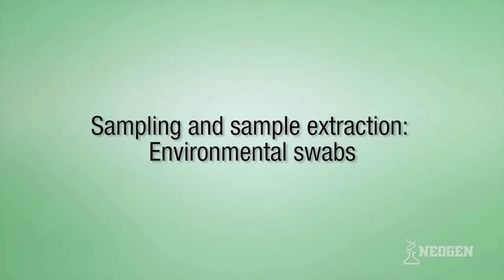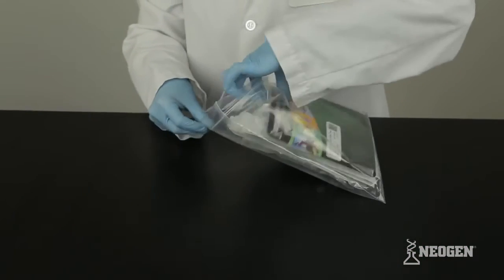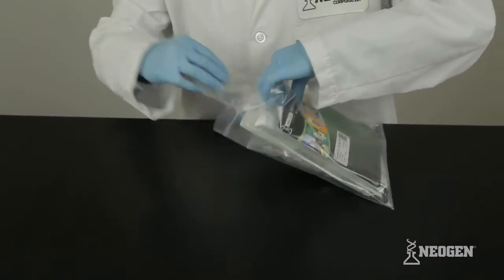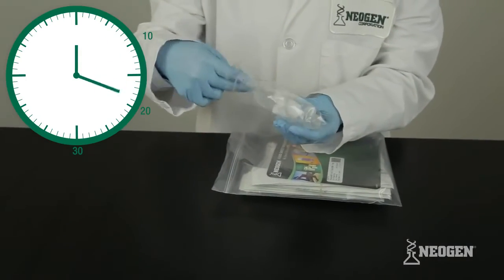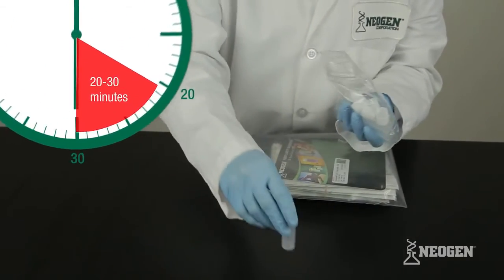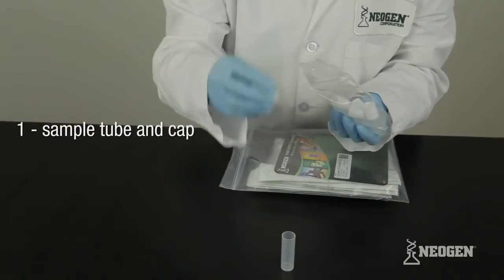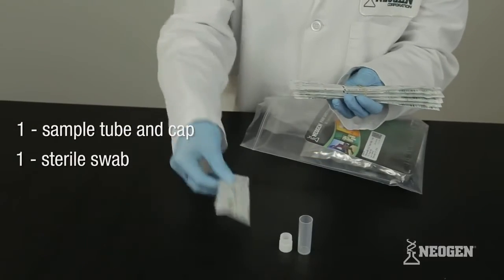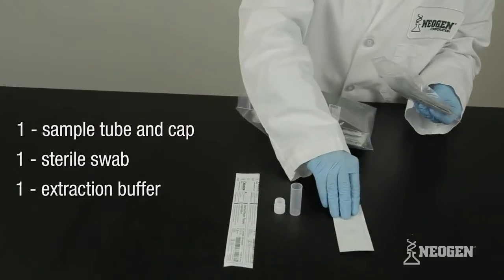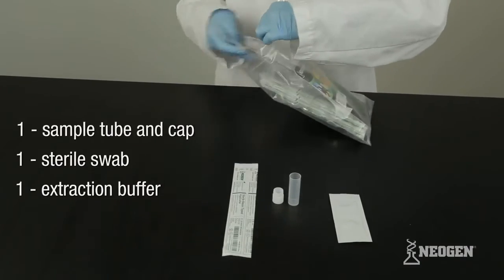Sampling and Sample Extraction of Environmental Swabs. Remove the test kit from refrigeration and allow it to reach room temperature before use. This generally takes 20 to 30 minutes. You'll need one sample tube and cap, one sterile swab, and one extraction buffer for each environmental surface you want to sample.